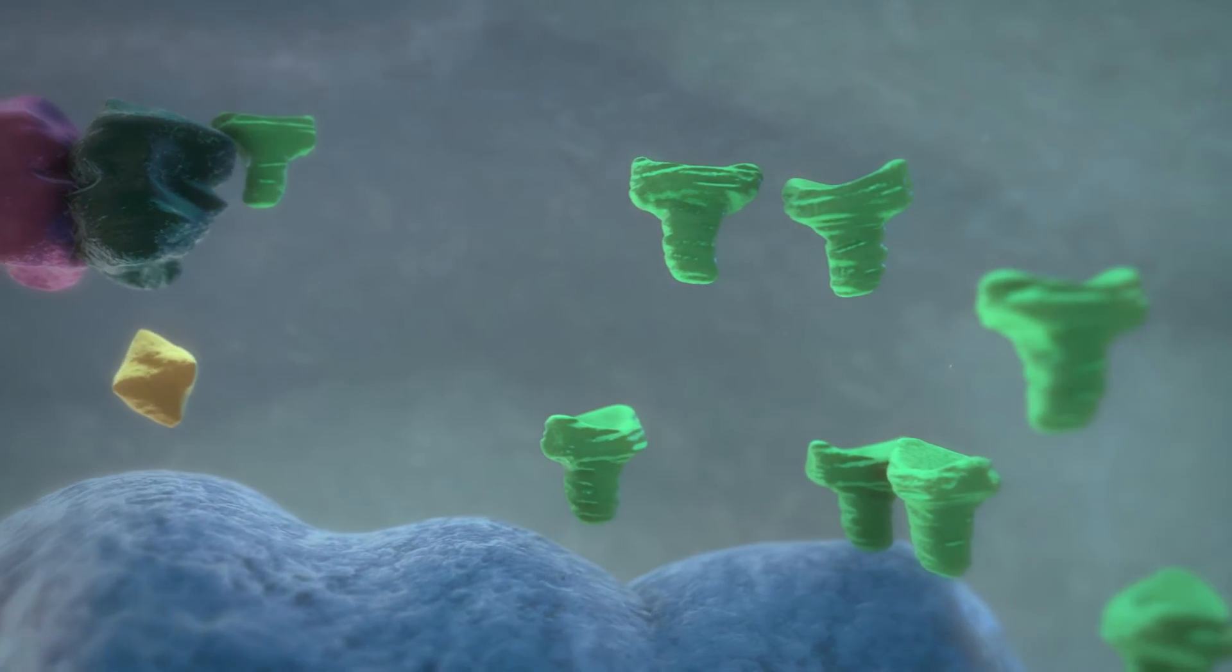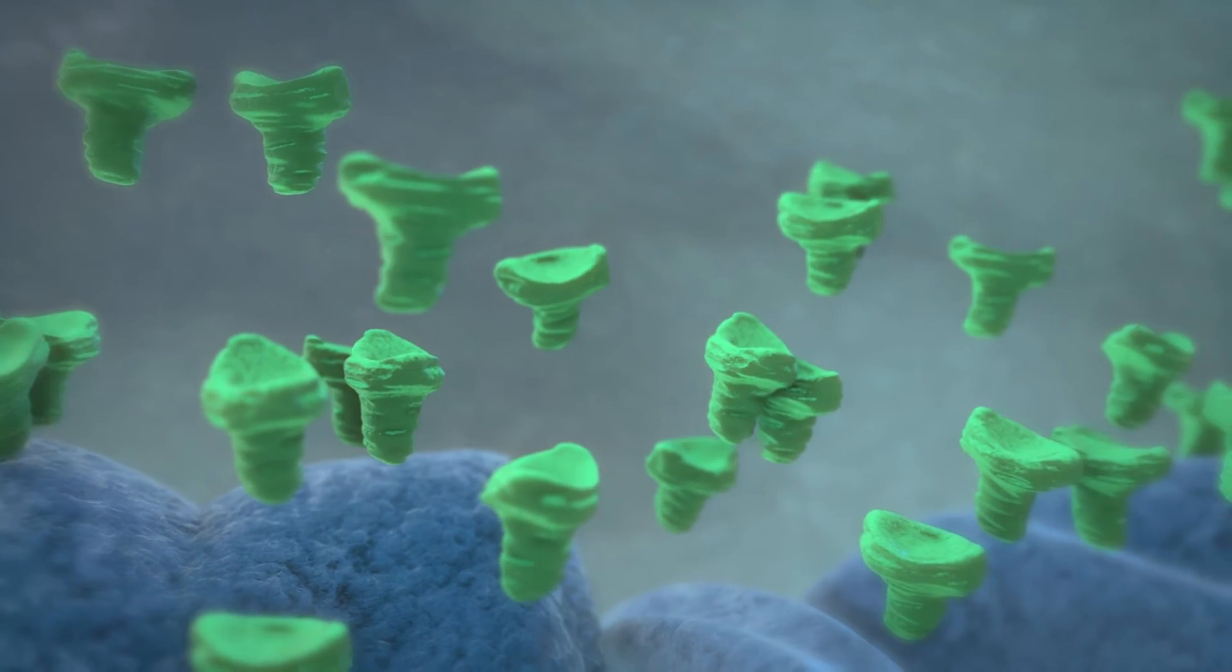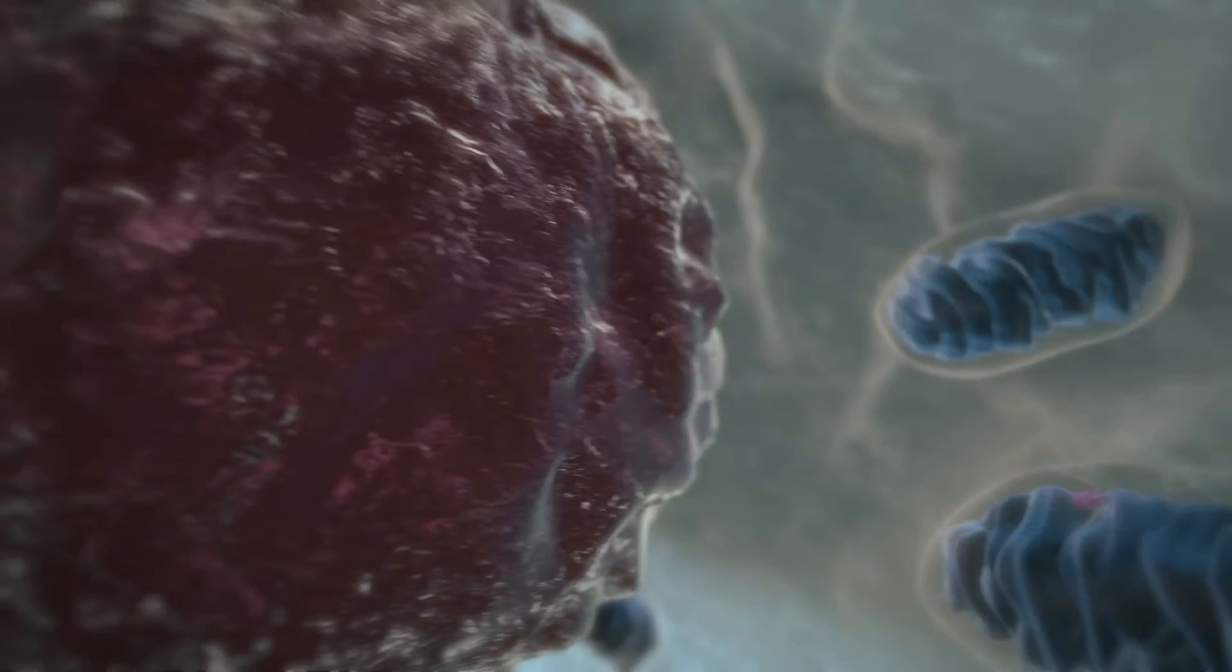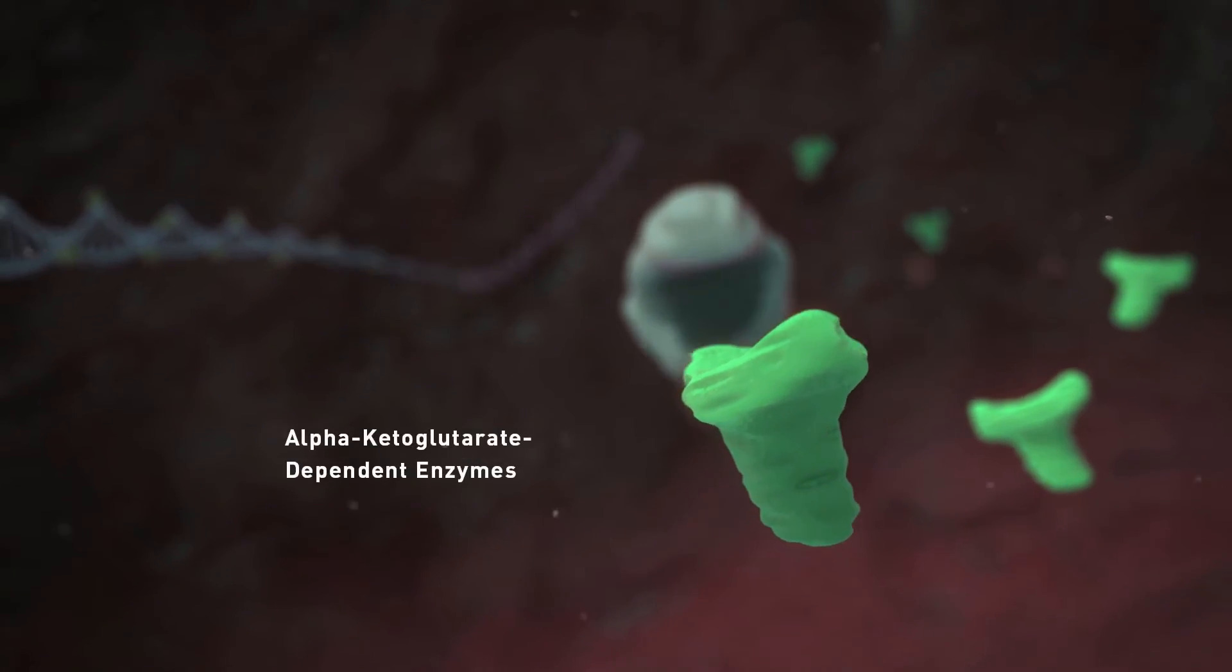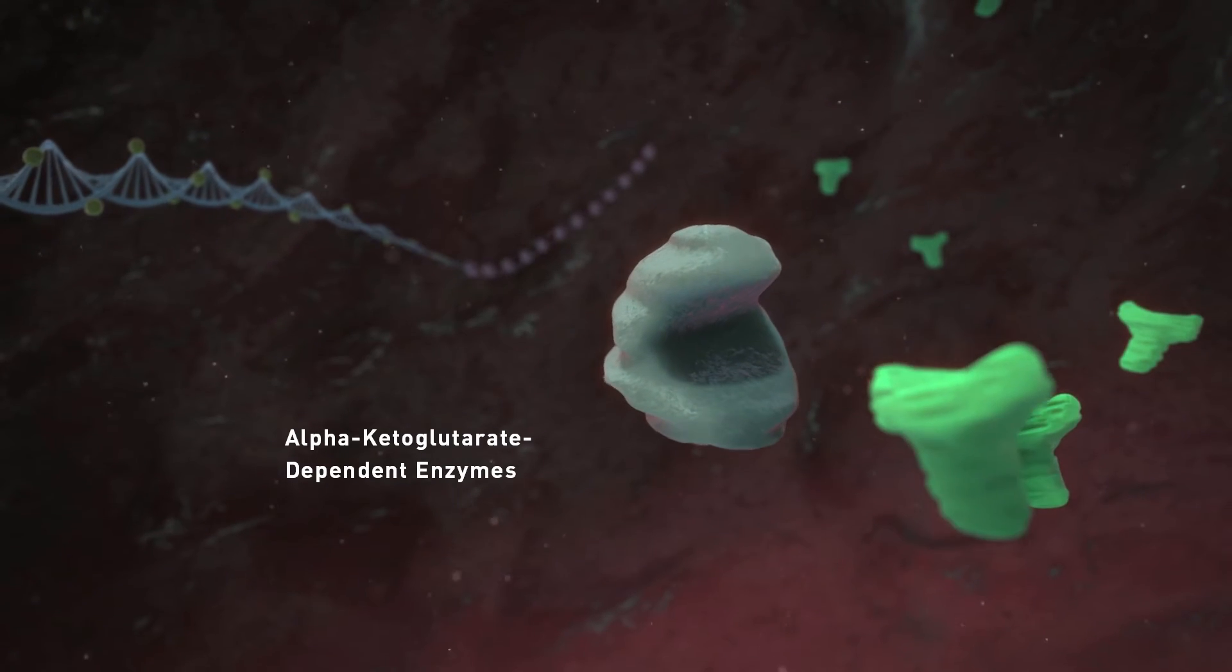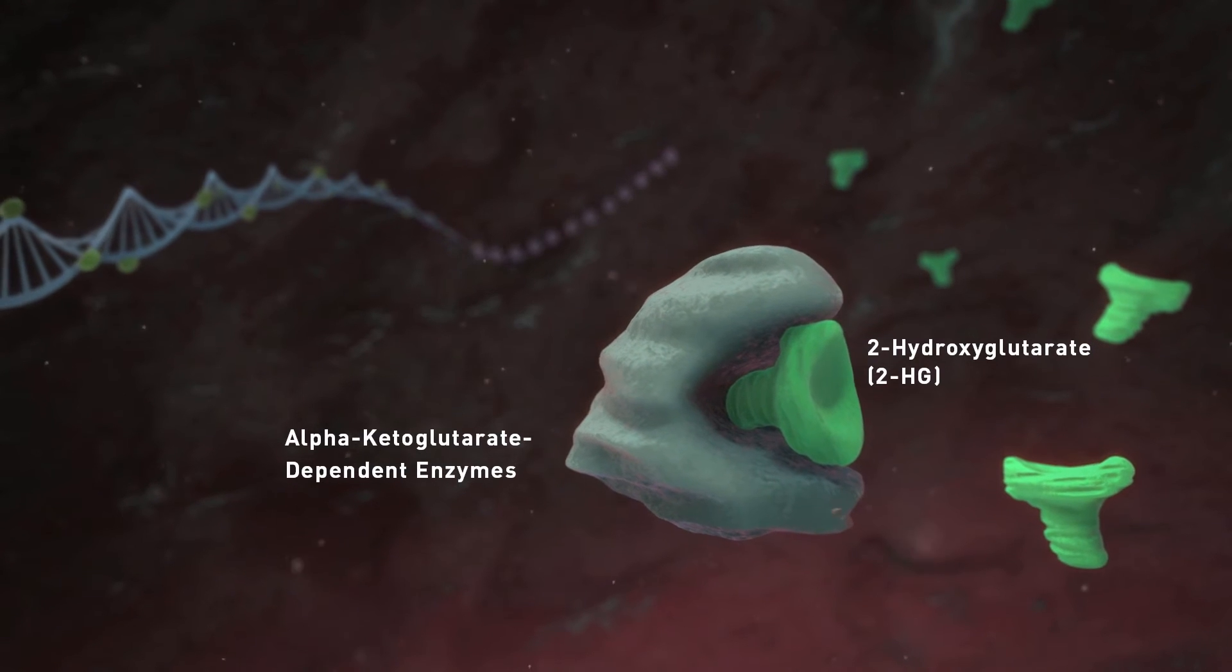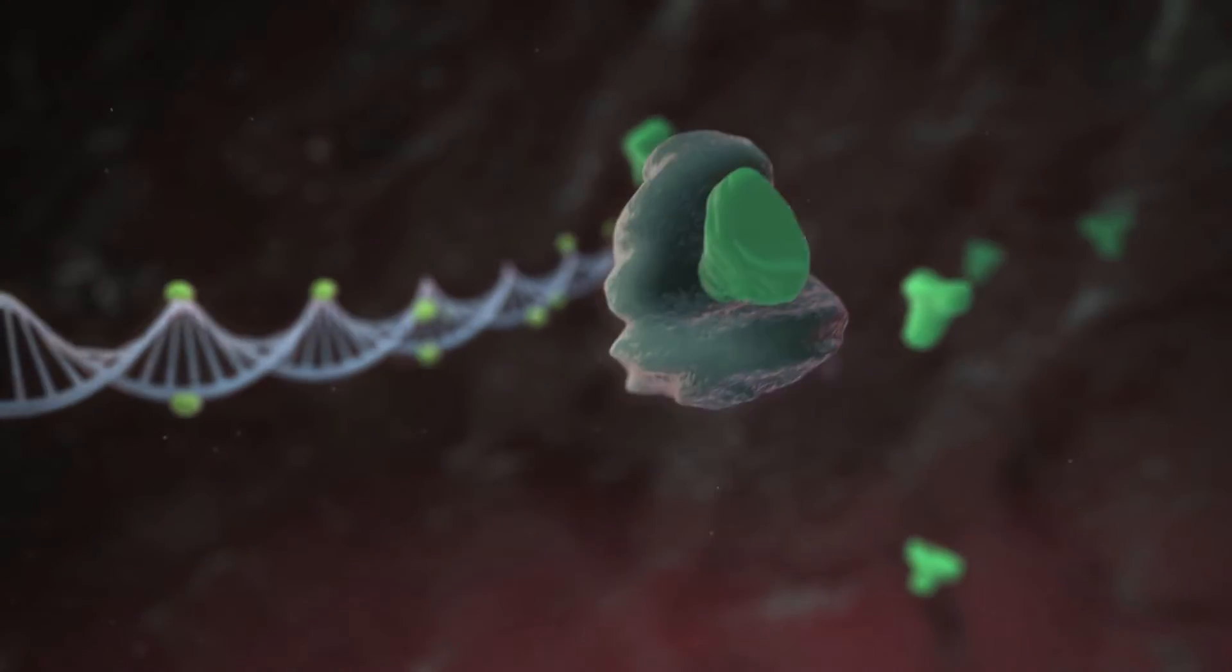The excess production of 2-HG can disrupt the function of cytoplasmic and nuclear alpha-ketoglutarate-dependent enzymes. This disruption occurs because of the chemical similarity between 2-HG and alpha-ketoglutarate. 2-HG binding to alpha-ketoglutarate-dependent enzymes prevents their ability to demethylate DNA and histones.